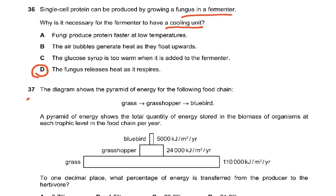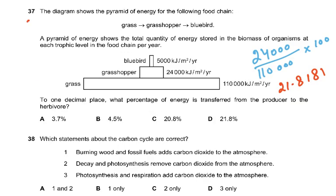Question 37. The diagram shows a pyramid of energy for the food chain: grass, grasshopper, bluebird. A pyramid of energy shows the total quantity of energy stored in the biomass at each trophic level per year. Bluebird: 5,000; grasshopper: 24,000; grass: 110,000. To one decimal place, what percentage of energy is transferred from the producer to the primary consumer? 24,000 ÷ 110,000 × 100 = 21.8181... To one decimal place that is 21.8%, so the answer to 37 is D.